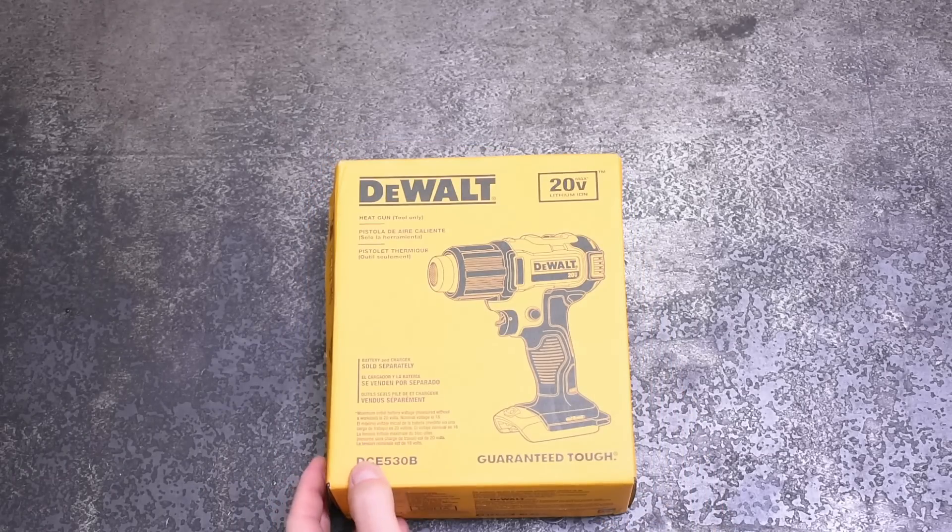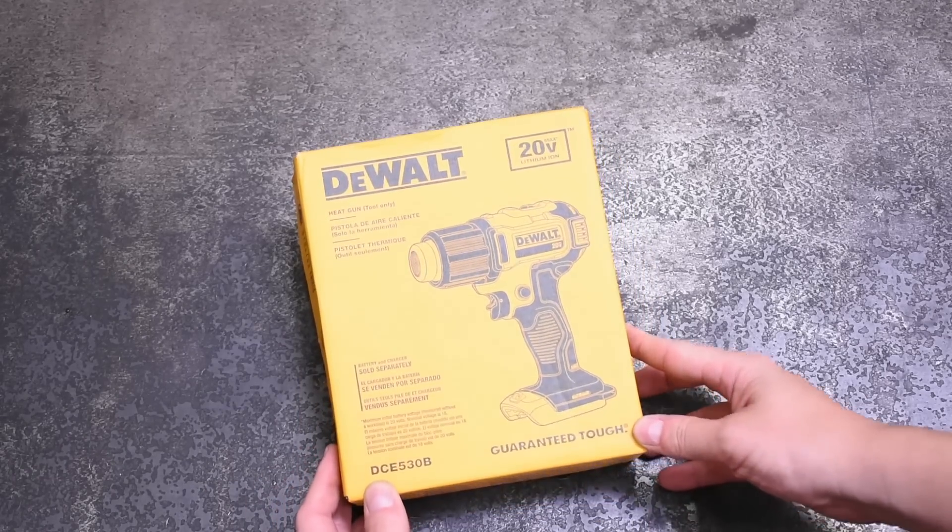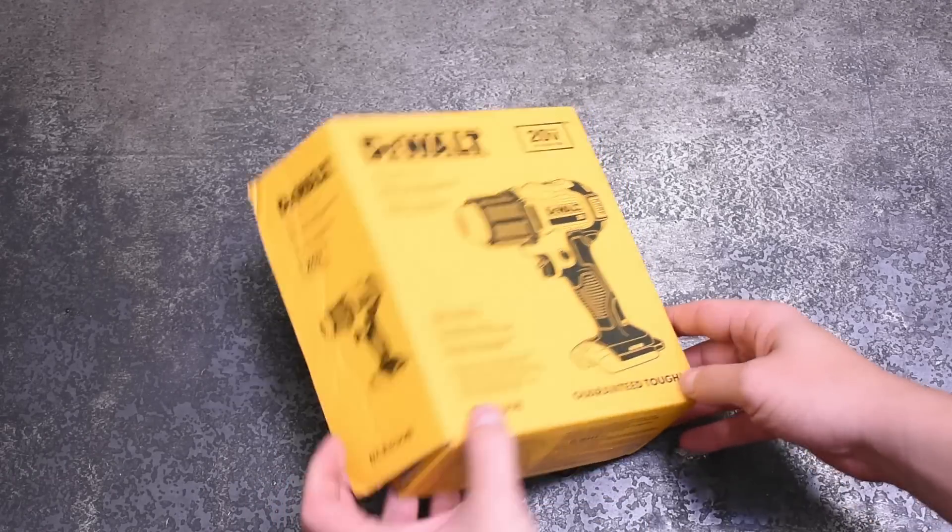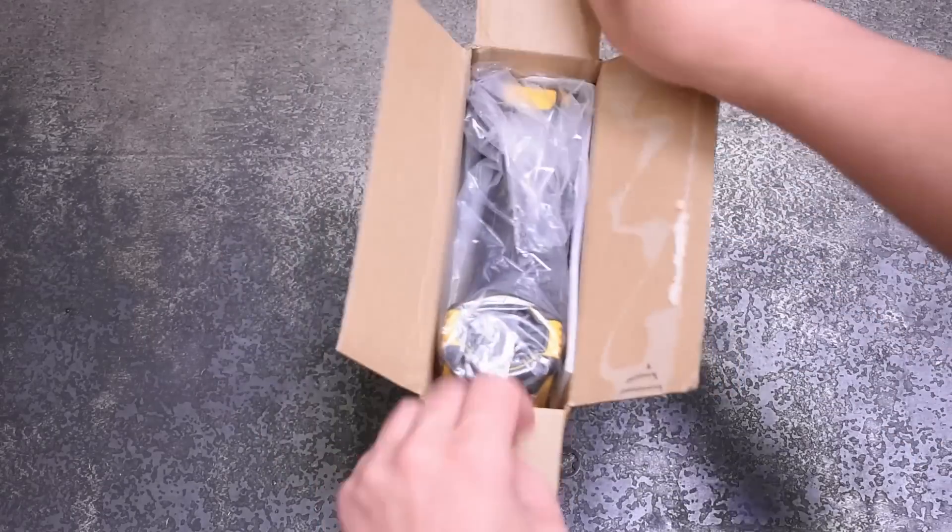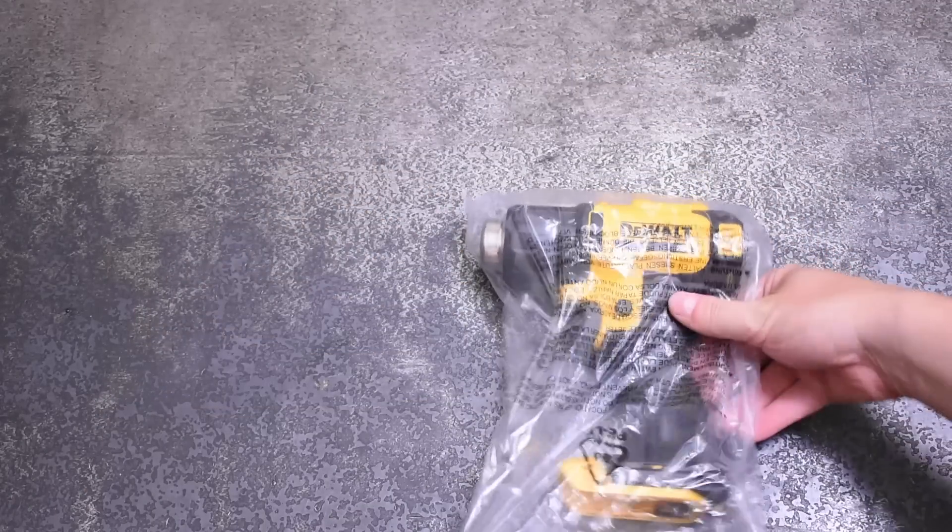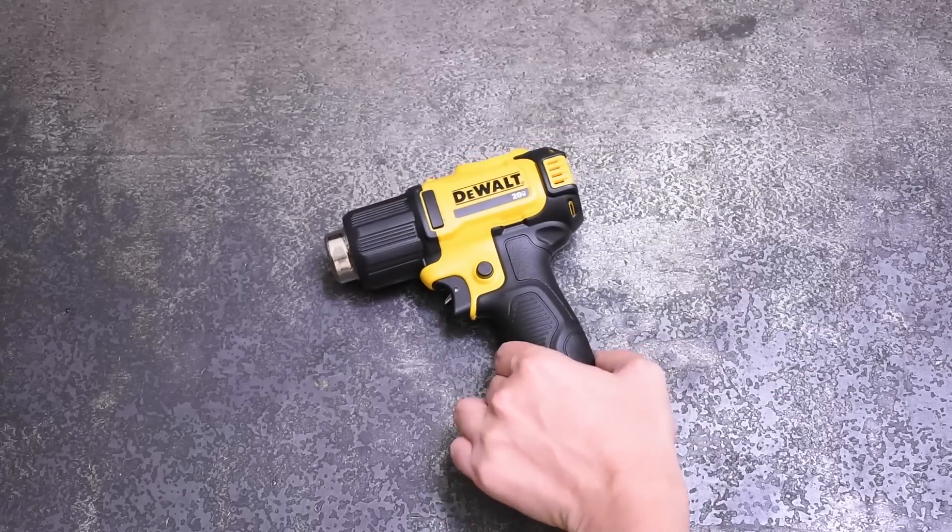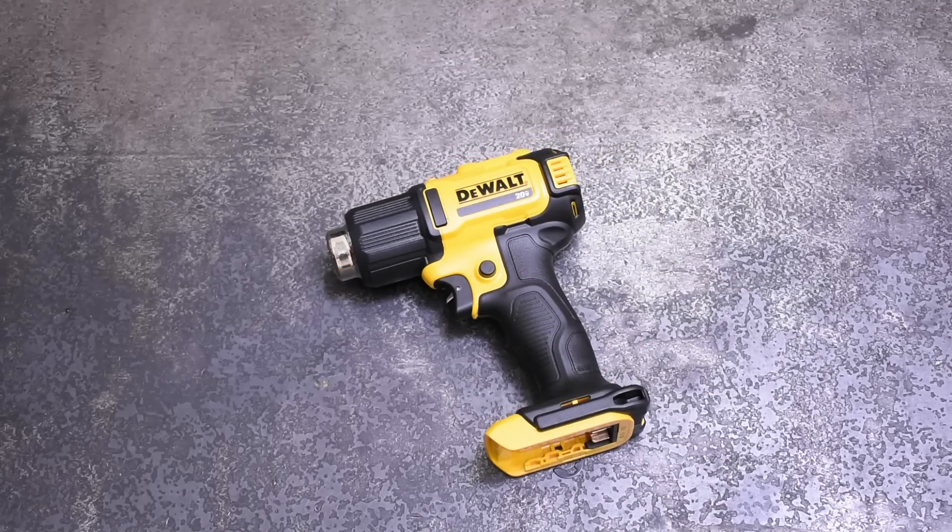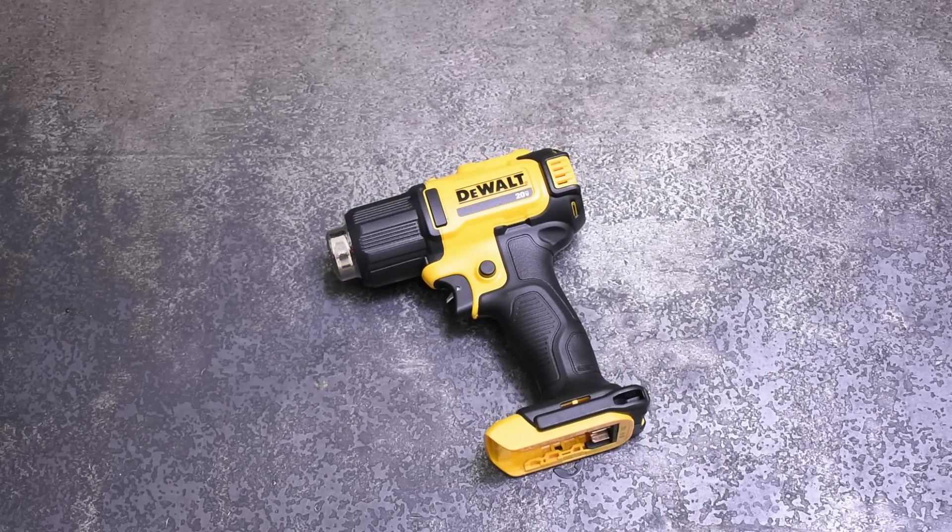So we're going to test that today with Dewalt and Milwaukee impacts and batteries and learn some stuff that surprised us quite frankly. But why then are you looking at a heat gun right now? Well, we need a quick and easy way to drain a battery, and from a physics standpoint, it doesn't get quicker or easier to drain watts than turning that into heat.